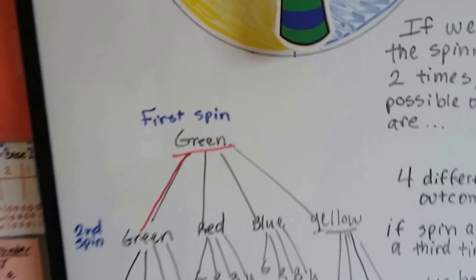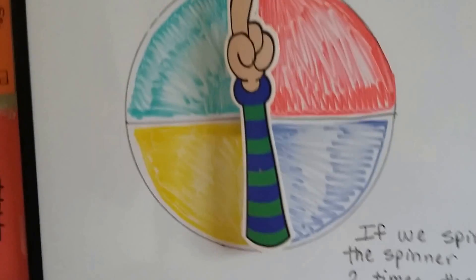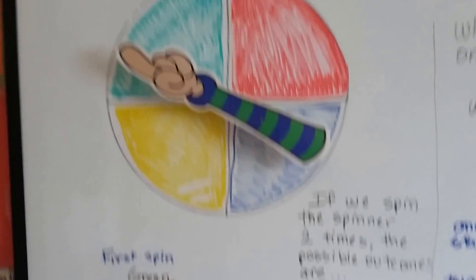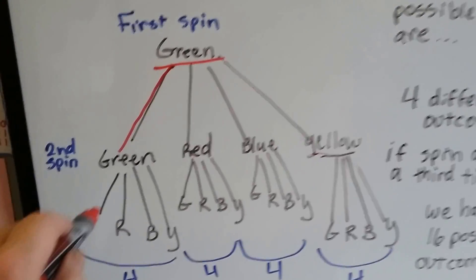So this is a tree diagram, okay? What do you think is going to happen when I spin it again? Look at that, it landed on green. What are the odds of that happening, huh?